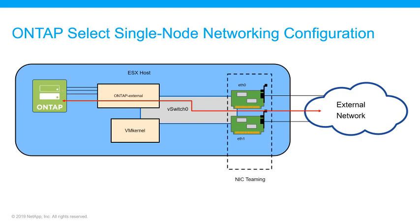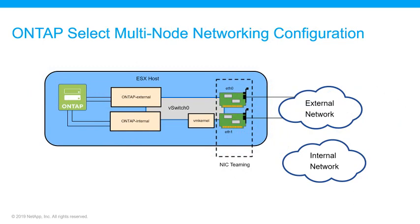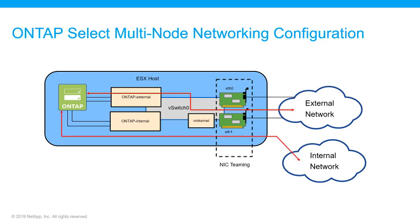The NetApp recommended best practice is to make use of NIC teaming on both the internal and the external networks of the ONTAP SELECT cluster. The multi-node ONTAP SELECT network configuration consists of two networks. In addition to providing access to the external network, multi-node ONTAP SELECT clusters require an additional dedicated port group and VLAN for ONTAP SELECT to ONTAP SELECT internal cluster traffic. The isolated internal network is required only when a multi-node cluster is deployed.